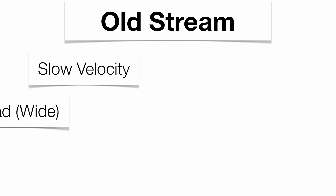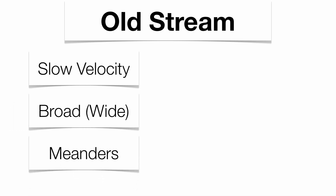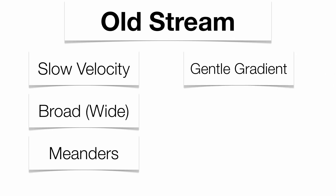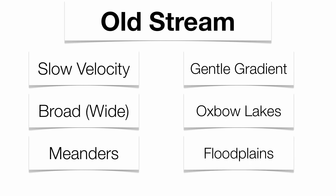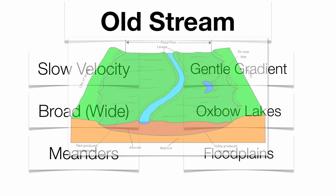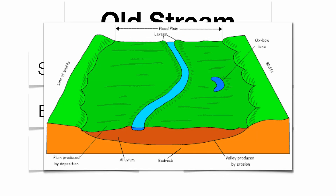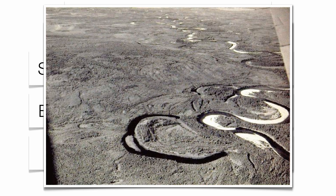That leads us into the ages of streams. Streams can actually have individual ages: young, middle age, or old age. Old streams have certain characteristics — they're relatively slow and relatively wide or broad. They tend to have a lot of turns or meanders, and they travel down a very gentle gradient. They tend to get things called oxbow lakes, which are meanders that have gotten cut off from the actual stream channel itself, and they tend to flood their banks quite a bit, forming what are called floodplains. Here you can see where the arrow is pointing to an actual oxbow lake — a meander that got cut off from the stream.